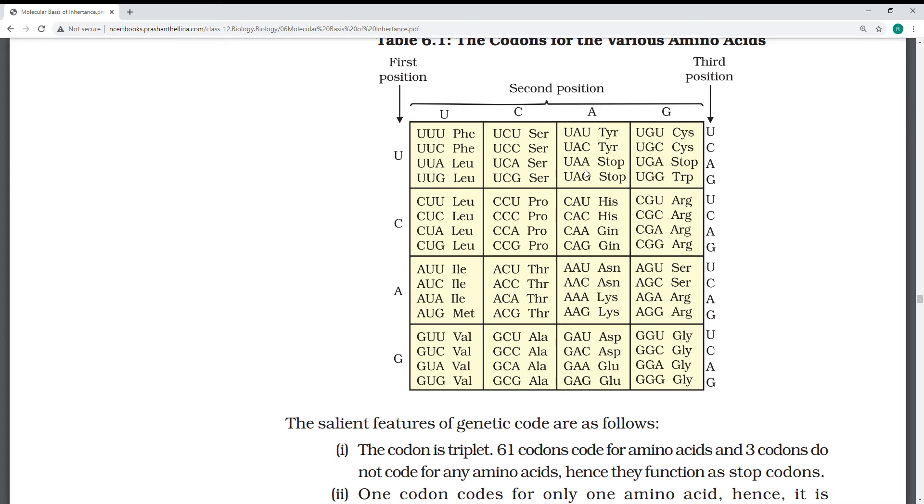There are some start codons and stop codons. UAA and UAG are stop codons, which code for ochre and amber respectively. UAA codes for ochre, UAG codes for amber, UGA codes for opal. These are stop or terminator codons, but these do not code for any amino acid.